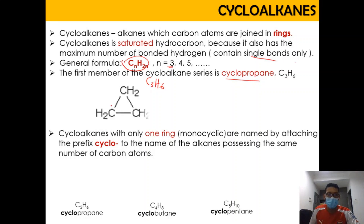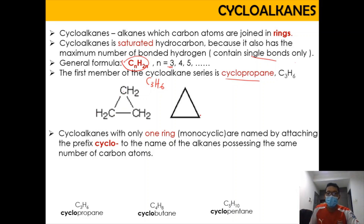Here is cyclopropane, which is C3H6. It can be drawn as the condensed structure or as the skeleton structure.